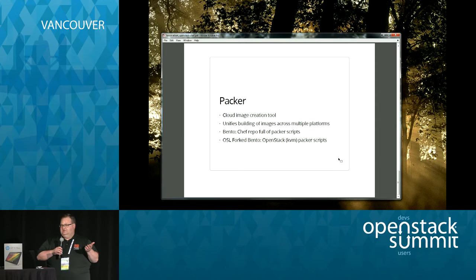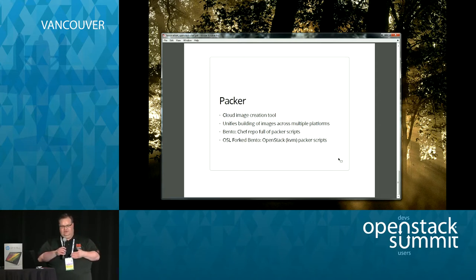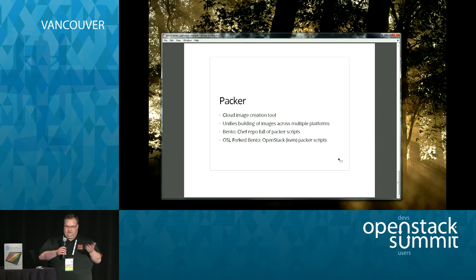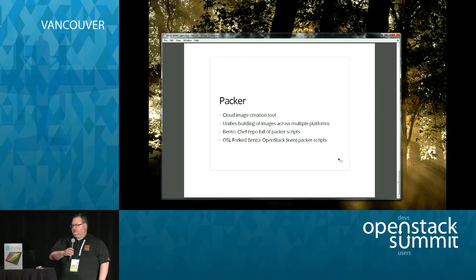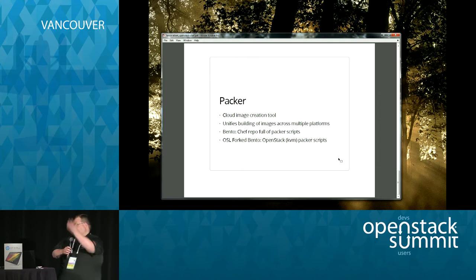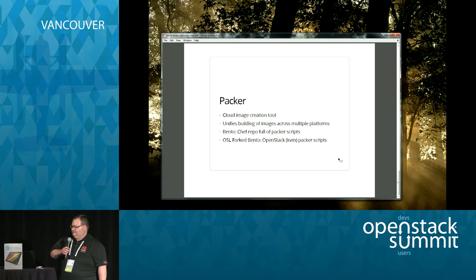Bento also handles things you don't need to worry about when creating VMs on different platforms — like weird networking things on Debian. We forked it because their repository is really built on Vagrant, but we wanted to make OpenStack VMs using it. So if you want to build all your OpenStack VMs on various platforms, check out our fork and we accept pull requests. I need to talk with JJ and the Chef folks to get it incorporated upstream. That's my talk.